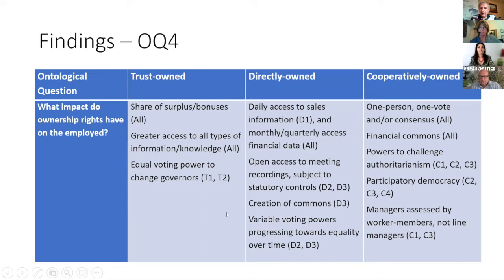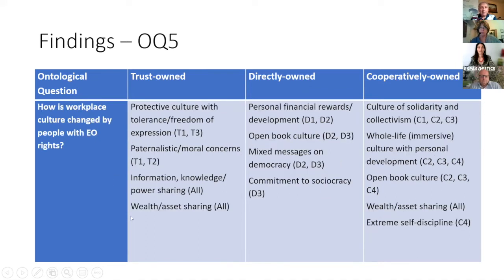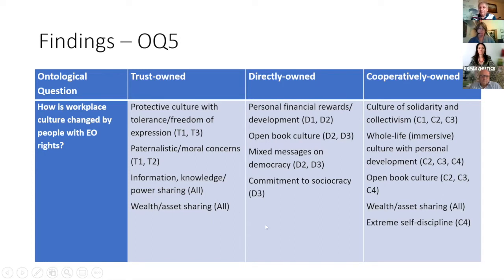Assessment of managers by workers was something found in co-ops that we didn't find in the other cases. On workplace culture: trust-owned showed a protective culture with paternalism, big on asset sharing across membership. Cooperative models showed solidarity and whole-life characteristics — personal development was stronger, whole-life culture was stronger. To get the rich conversation around how we arrived at these findings you'd have to read the paper, but let me share three conclusions.